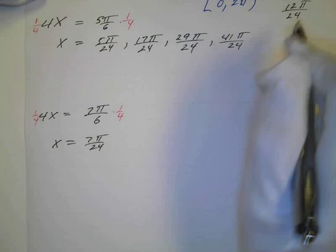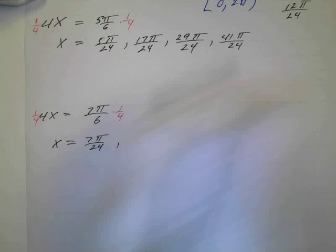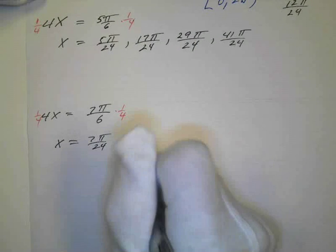Now, the same thing over here. I've got this one. And I'm going to be adding, again, the same thing, 12π. So this is going to be, what's 7 plus 12? That's 19π over 24.